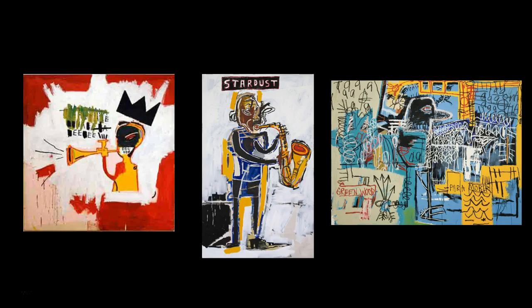Many scholars have connected Basquiat's interest in jazz to a larger investment in African American popular culture — he also painted famous African American athletes. But an alternative explanation is that the young Basquiat looked to jazz music for inspiration and instruction, much in the same way that he looked to the modern masters of painting. Parker, Gillespie, and other musicians of the bebop era famously appropriated the harmonic structures of jazz standards, using them as frameworks for their own songs, and repeated similar note patterns across several improvisations. Basquiat used similar techniques of appropriation throughout his career as a painter.